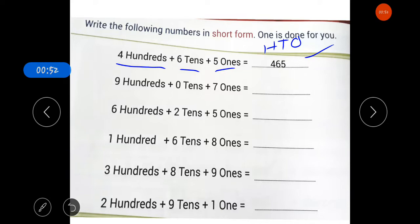In the second question, like 9 hundreds, you write 9 in the hundreds place. Then 0 tens means the tens value is zero, so the tens place is zero. Then 7 ones, so in the ones place you write 7. So this is the short form.